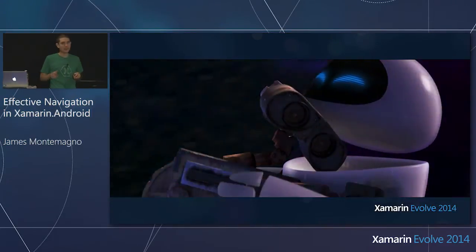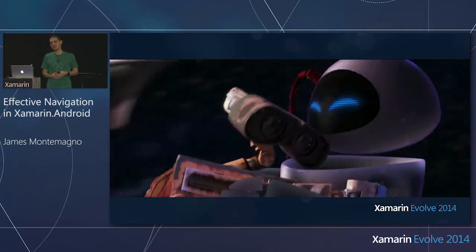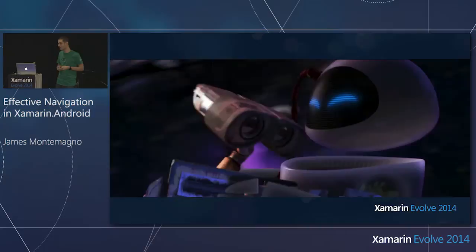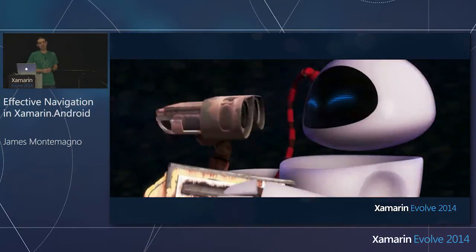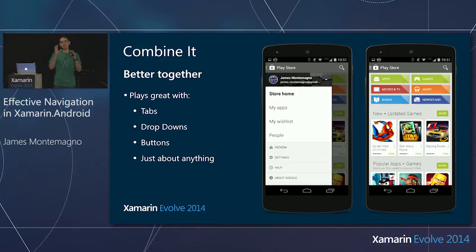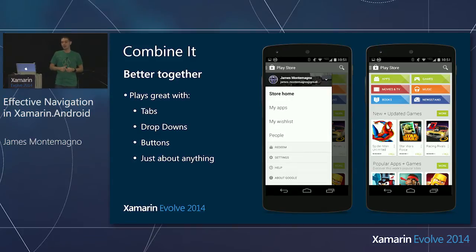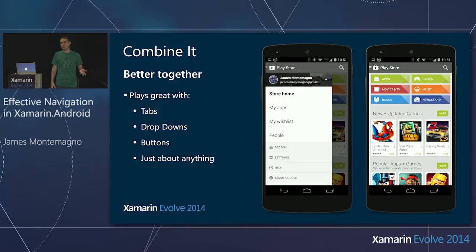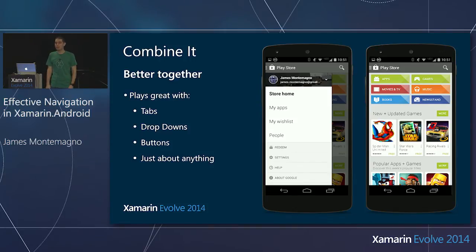The best part about the navigation drawer is that navigation is better together. When you think about the navigation drawer, those are the main points of your application. Think about Google Play Store — when you pull out the navigation drawer, these are my applications, my wish lists, my friends. But if I was to put apps, games, music, newsstand, all these sections inside of there, that navigation drawer is going to be filled with junk — hard for users to navigate through. So what you can do is combine things together, such as tabs. Don't put multiple filters inside the drawer; combine those with tabs and other navigation paradigms.